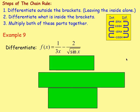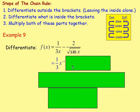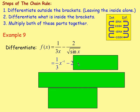Example 9: differentiate f(x) equals 1 over 3x minus 2 over root sine x. We do have root signs and x's in the bottom of a fraction, so we need to rewrite them. For 1 over 3x: move x up to the top line — x to the power of 1 becomes x to the power of negative 1, giving one-third x to the negative 1. For the sine x: it's sine x to the power of a half (square root) — move it up and the power becomes negative a half — so we're taking away 2 sine x to the power of negative one-half.